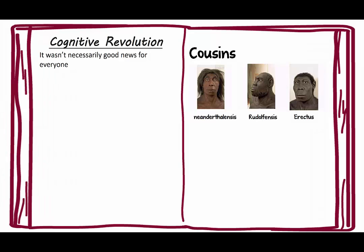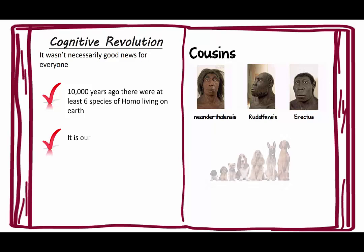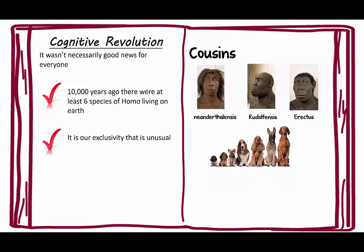The cognitive revolution wasn't necessarily good news for everybody. Our cousins — the Neanderthals, Homo erectus, and some others — 10,000 years ago there were at least six species of those living on earth. Right now the fact that we are the only ones — our exclusivity — is unusual. If you think of dogs, there's still a whole bunch of different species, but Homo sapiens are the only species of Homo.